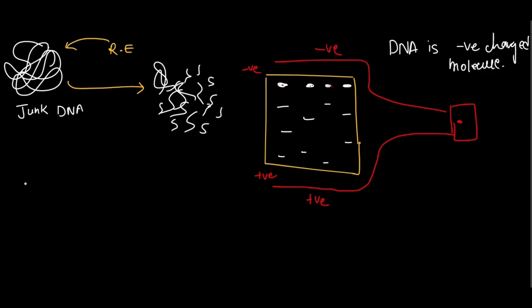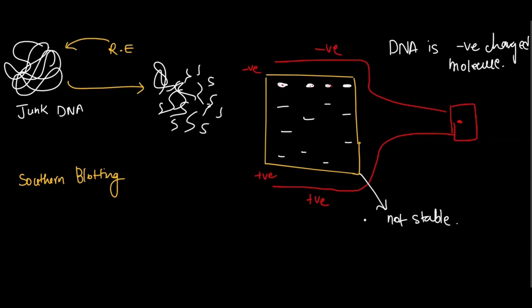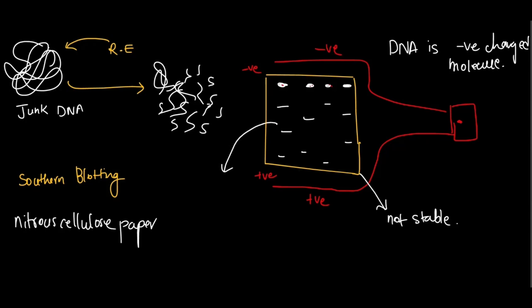After turning off the battery after a specific time period, we perform Southern blotting. The result is currently in the gel, which is not stable. So we transfer the DNA onto a more stable material — nitrocellulose paper or nylon paper.